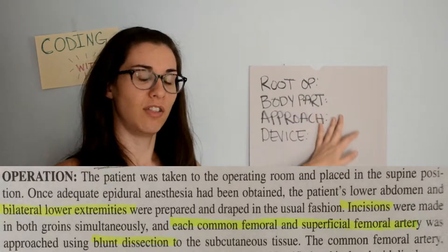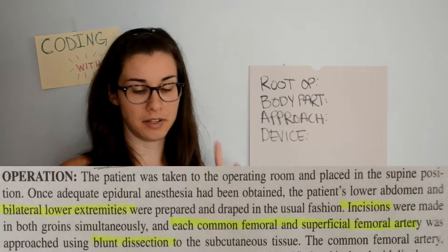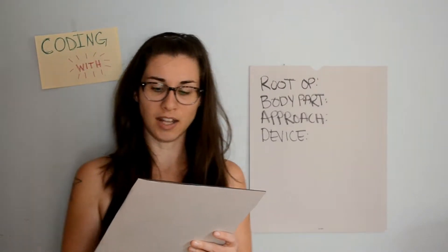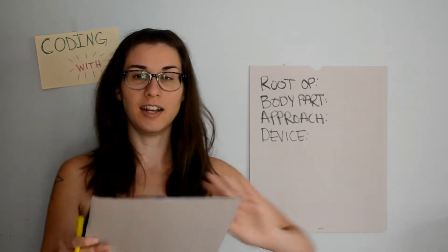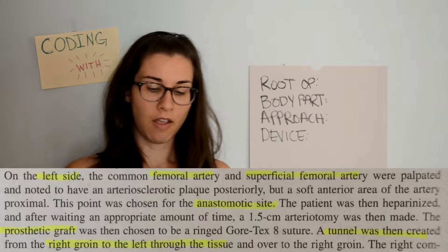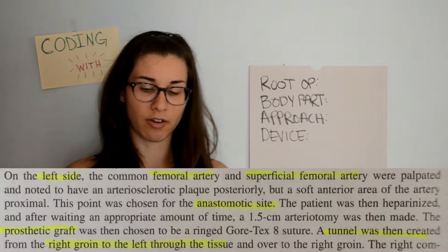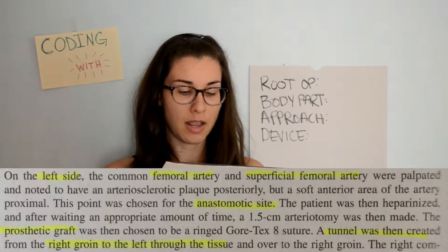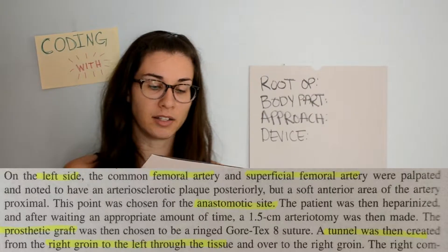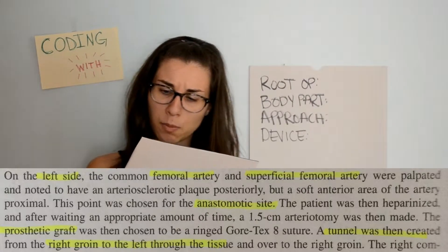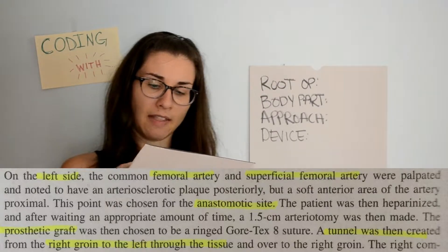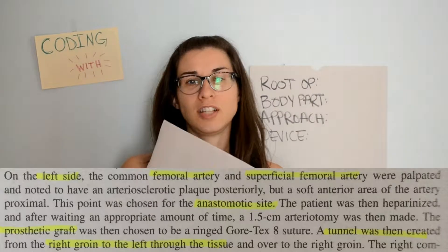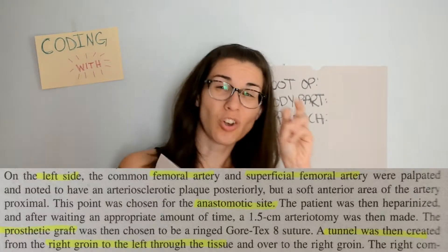Each common femoral and superficial femoral artery was approached using blunt dissection to the subcutaneous tissue. We'll see how far in they go to determine if this means an open or percutaneous approach. The common femoral artery, superficial femoral artery, and profunda femoral artery were identified and isolated with liga loops. On the left side, the common femoral and superficial femoral arteries were palpated and noted to have arteriosclerotic plaque posteriorly, but a soft anterior area proximal to this point was chosen for the anastomotic site — that's where two body parts are sewn or connected together.